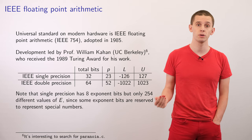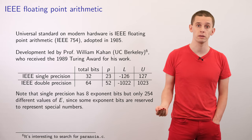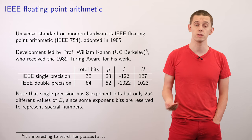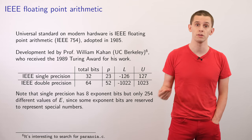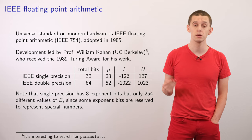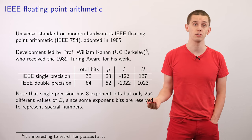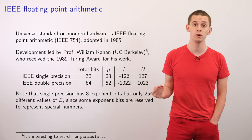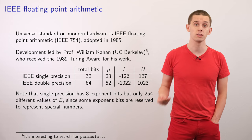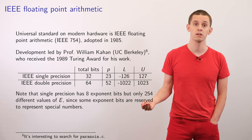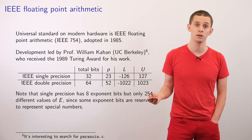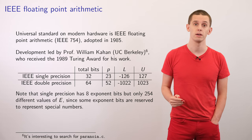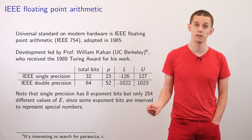The developers of this number system, Professor Kahan and his team, were really cognizant of ensuring numbers work as expected. There's a really interesting piece of computational history where they developed a code called paranoia.c that could actually test many features of the numerical system, and we'll take a look at that.